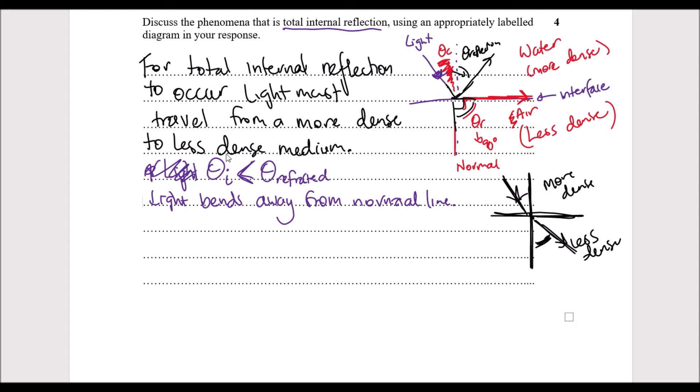So as we increase the angle of incidence, so as I try and increase the angle of incidence, what will happen is it will lead to the angle of refraction increasing, increasing, increasing, and so it's going to bend further away from the normal. I might just label where the normal line is.